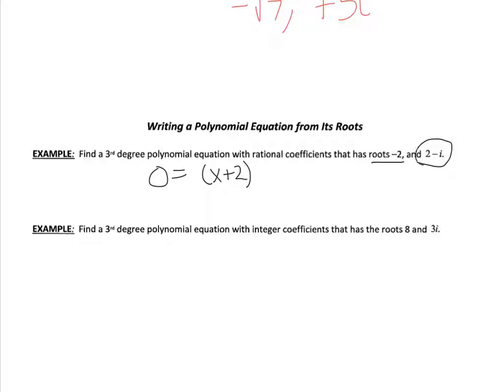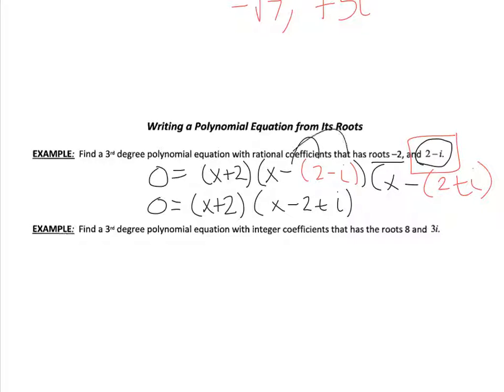If I know it has a root at 2 minus i, it's going to be x minus, and I'm going to be careful and put this in parentheses, 2 minus i. Because you're subtracting that whole quantity. So if it has a root at 2 minus i, it also has a root at 2 plus i. So I'm going to write that one in. So I still do x minus, but this time in red I do 2 plus i. So let's make that look better without having those parentheses. So it's x plus 2, and then x minus 2 plus i, because I did a distributed property. And it's going to be x minus 2 minus i over here.